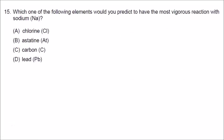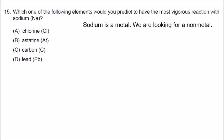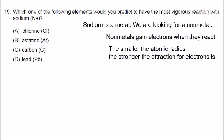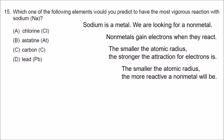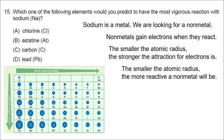Number fifteen: which element would have the most vigorous reaction with sodium? Sodium is a metal, so we are looking for a nonmetal on the right side of the periodic table. Nonmetals gain electrons when they react; the smaller the atomic radius, the stronger the attraction for electrons, and the more reactive the nonmetal. Fluorine is the most reactive nonmetal but isn't listed as a choice. Chlorine is on the right side and relatively small, so chlorine would have the most vigorous reaction with sodium.